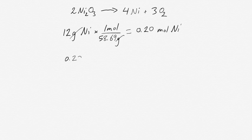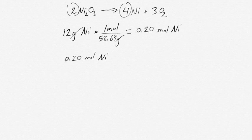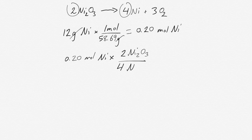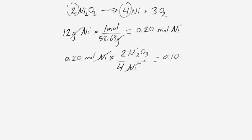So if you've made 0.2 moles of nickel metal, you can work out how much nickel 3 oxide you needed. 0.20 moles of nickel, and there are two nickel oxides for every four nickel metals. You set up your ratio where the nickels cancel, and you end up with 0.10 moles of nickel 2 oxide.